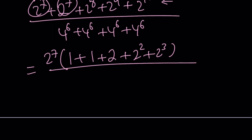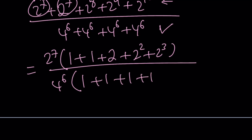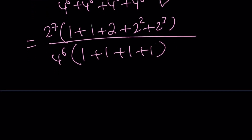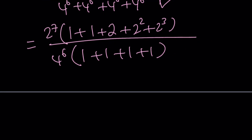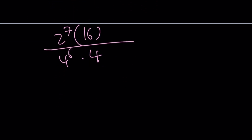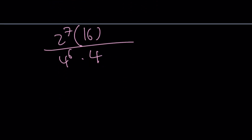That is divided by the denominator. At the bottom, I take out 4 to the 6 as the greatest common factor, giving 1 plus 1 plus 1 plus 1. Adding up everything inside the parentheses in the numerator: 1 plus 1 is 2, 2 plus 2 is 4, 4 plus 4 is 8, 8 plus 8 is 16. So the numerator becomes 2 to the 7th times 16. The denominator becomes 4 to the 6th times 4.